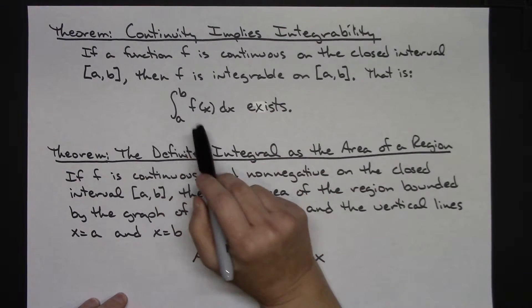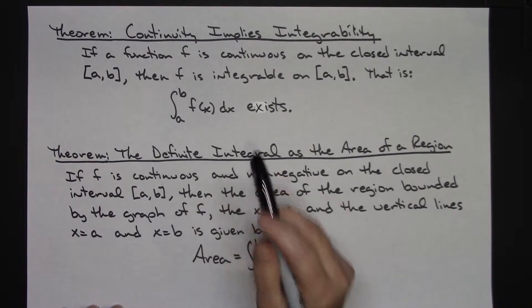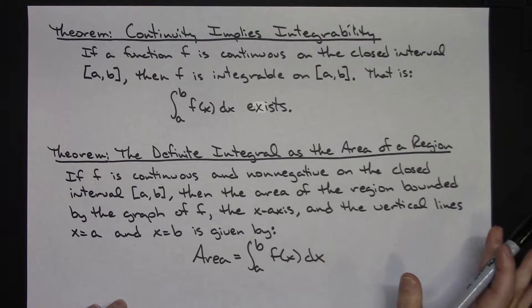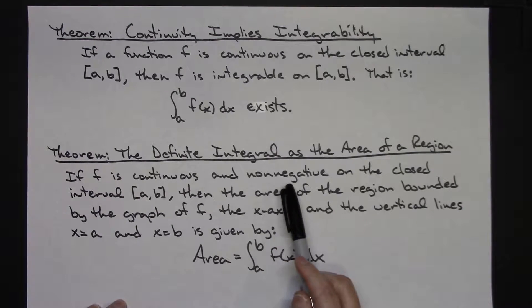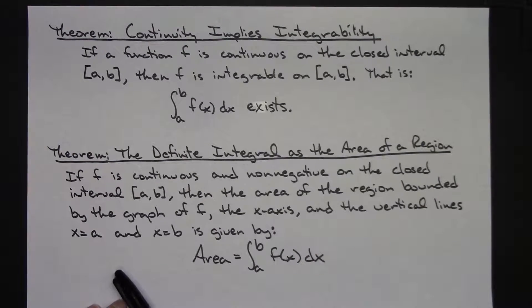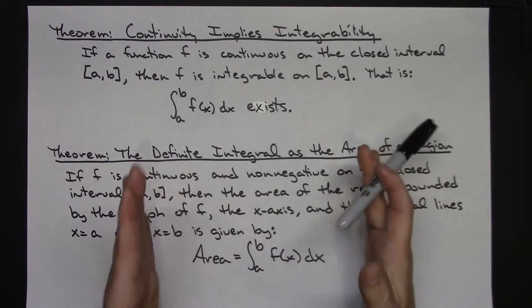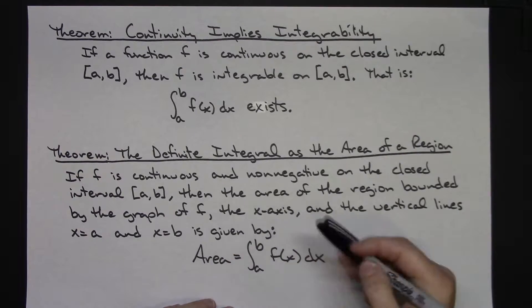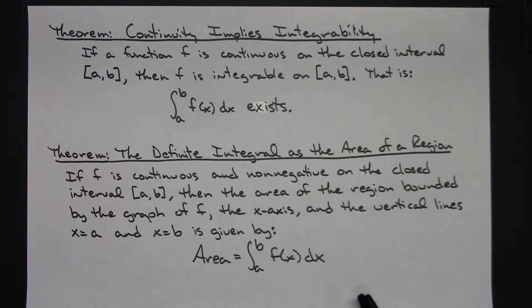Another theorem here is the definite integral as an area of a region. If f is continuous and non-negative on the closed interval from a to b, then the area of the region bounded by the graph of f and the x-axis and the vertical lines x equals a and x equals b is going to be given by the integral from a to b of f of x dx. So I'm going to have an interval from a to b, I'm going to have two vertical lines there, and I'm going to use the x-axis and my curve, and that's going to be my definite integral as the area under that region.